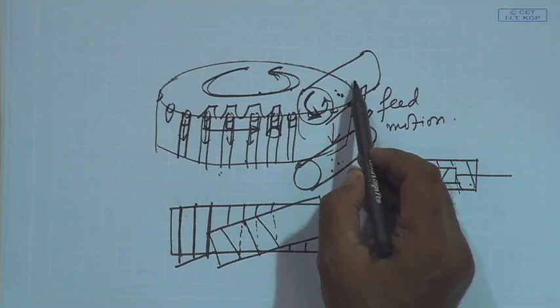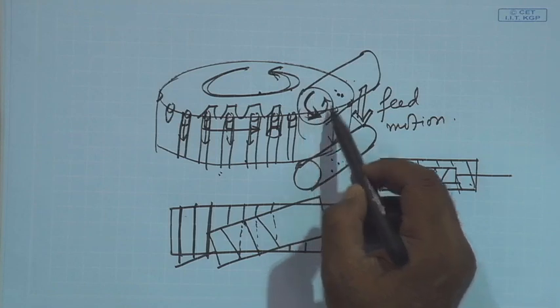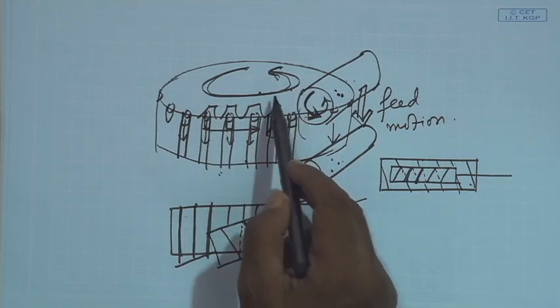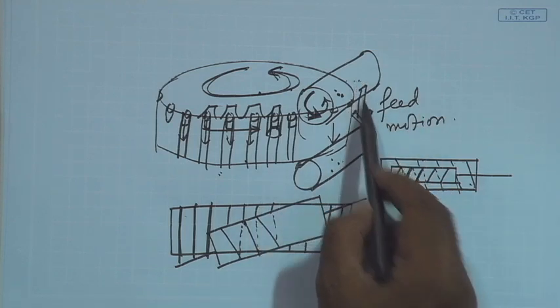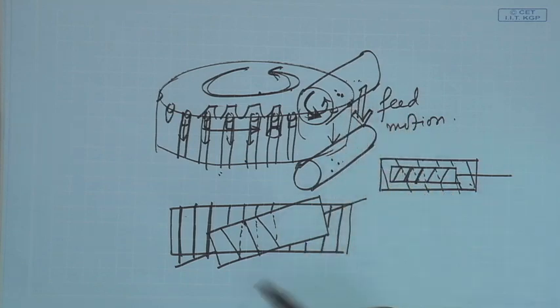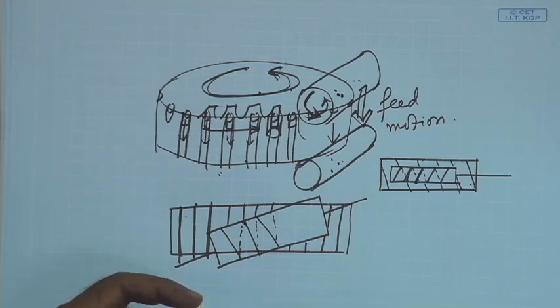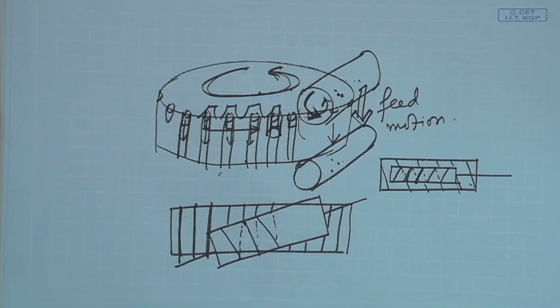The worm — or the hob — with cutting edges has to have rotatory motion to develop cutting speed. The work piece has to rotate in order to get indexing motion, and the hob has to be fed vertically downwards in order to have feed motion. You might ask: is this the only possible configuration for hobbing? The answer is no — there can be other methods, but this is one of the most common methods by which hobbing is done.